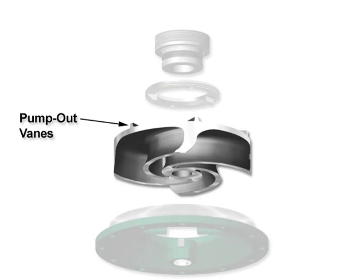Pump out vanes on the impeller backplate act to pump away stray solids around the seal area while offsetting thrust loading against the pump bearings.